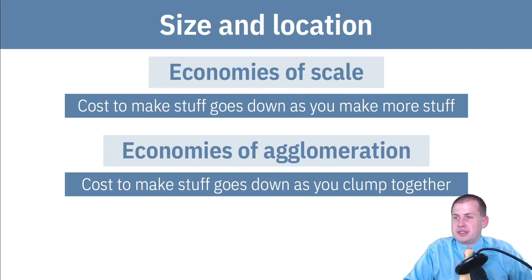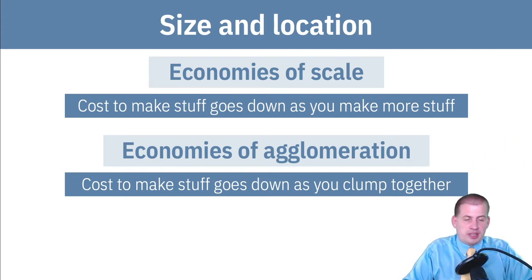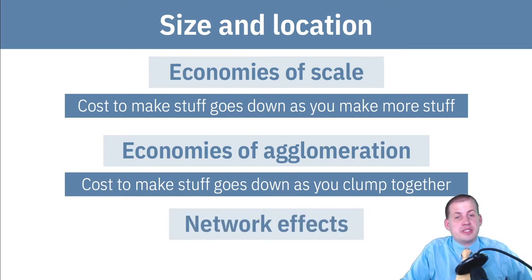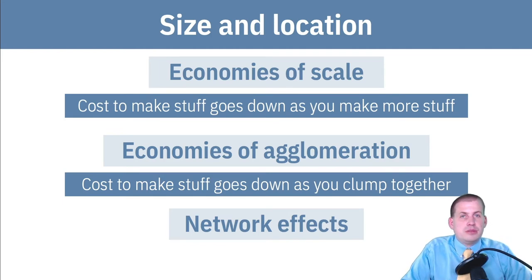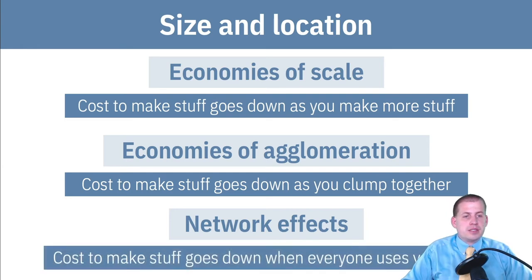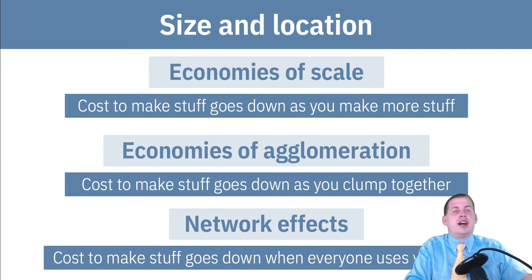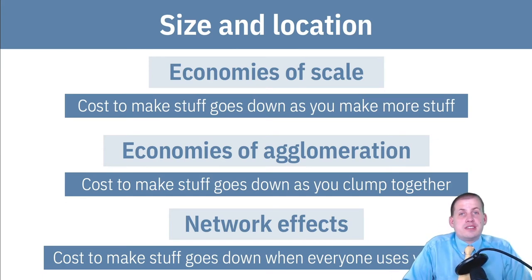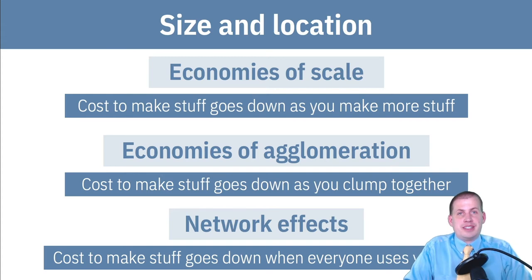The last thing we're going to talk about with costs is network effects, where if people start using your stuff, it actually makes it cheaper for them to keep using your stuff, and the cost to do things goes down when everybody uses your platform. We see this especially with the internet. For instance, if you wanted to create a competitor to Craigslist — a place where people can buy and sell things — that's going to be really hard to do.